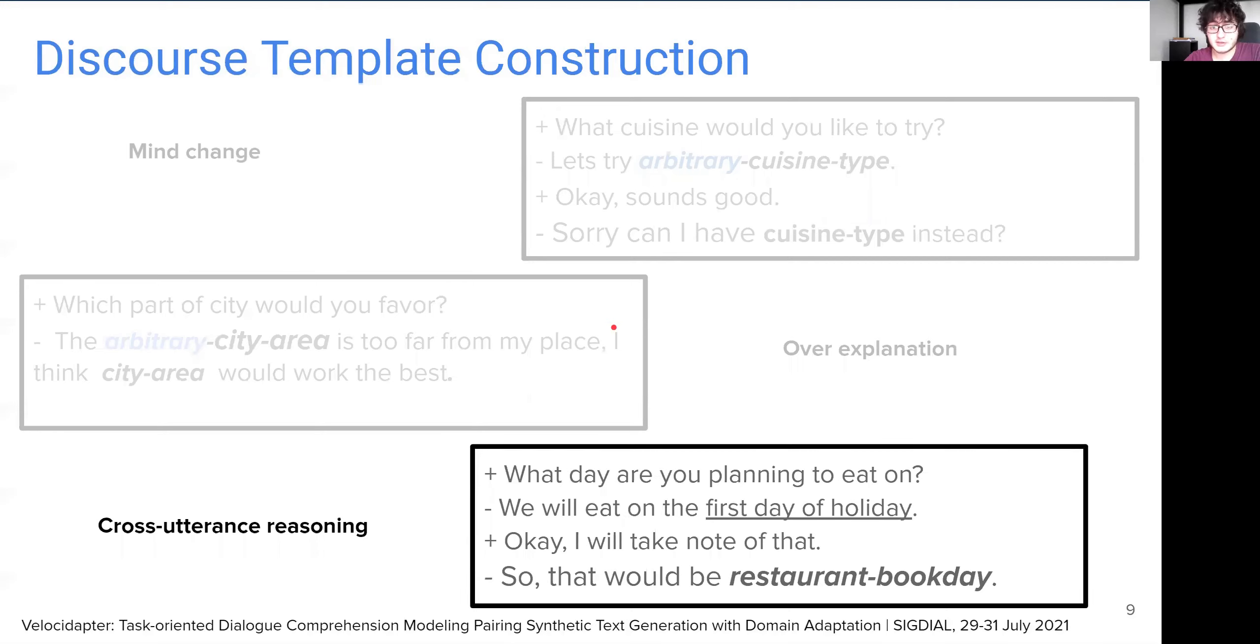Lastly, one can also design the cross-turn scenario using discourse templates, where the value of the slot label can only be found with the understanding of previous turns. Apart from these templates, VelocAdapter also expects a list of values and questions for each slot label, and then it is ready to simulate a dialogue comprehension dataset.